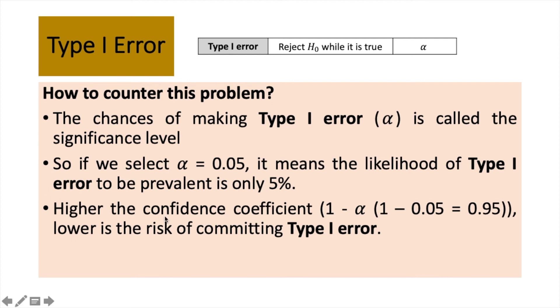Higher the confidence coefficient, which is 1 minus alpha, 1 minus 0.05, if we have selected a significance level of 5%, it will equal to 0.95. It means we are 95% confident that we are able to lower the risk of committing Type 1 error. So, that's why in our test statistics, alpha plays an important role. You can even select an alpha less than 0.05.